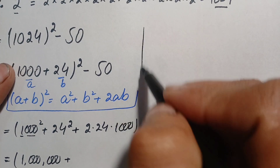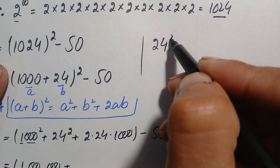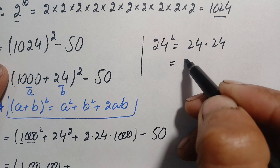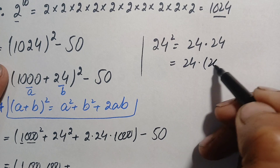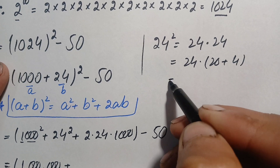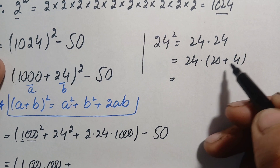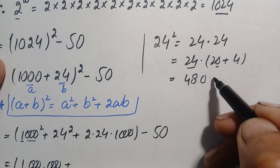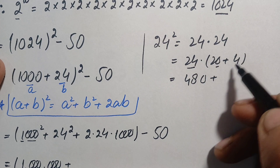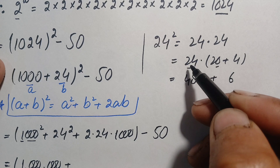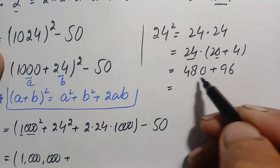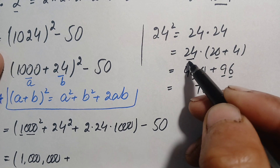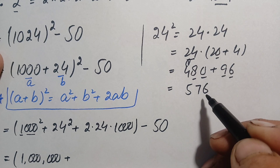For 24 squared, we multiply 24 times 24. We write 24 as 20 plus 4. Multiplying 24 by 20 gives 480. Multiplying 24 by 4: 4 times 4 is 16, carry 1; 4 times 2 is 8, plus 1 is 9 — giving 96. Adding 480 plus 96: 0 plus 6 is 6, 8 plus 9 is 17, carry 1; 4 plus 1 is 5. So 24 squared is 576.